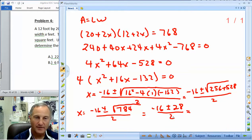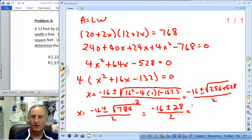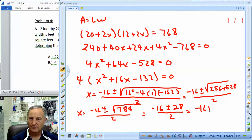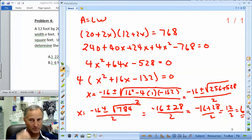So we've got a plus 528 because you got a negative 4 times a negative 132 all over 2. So we get negative 16 plus or minus the square root. 256 plus 528. That's going to be 784 all over 2. What is the square root of 784? So we've got negative 16 plus or minus 28 all over 2. So we know we have to have a positive x because this is a real problem. We need a length. So I'm going to take the negative 16 plus 28 all over 2. That's going to give me 12 over 2. That gives me an x equal to 6.